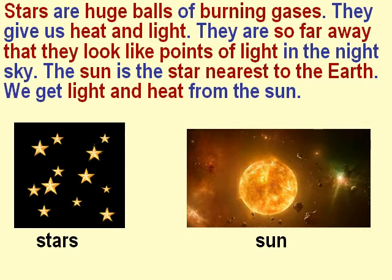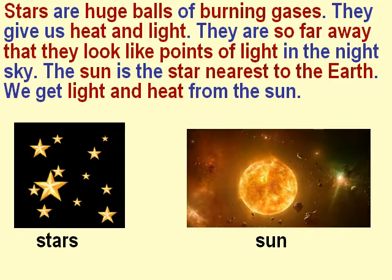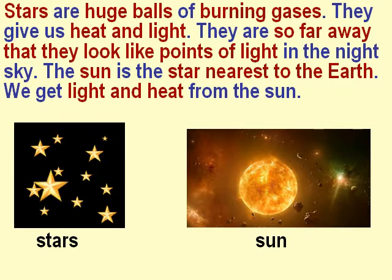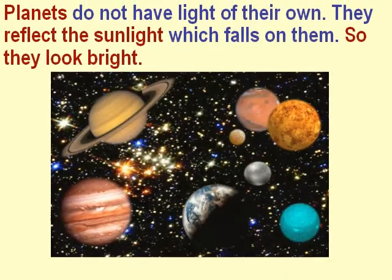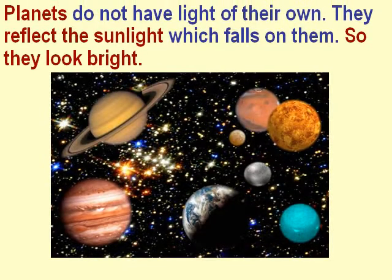The sun is the star nearest to the earth. We get light and heat from the sun. Planets do not have light of their own. They reflect the sunlight which falls on them, so they look bright.